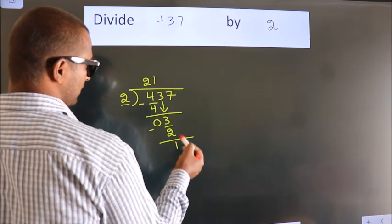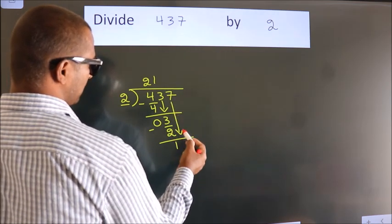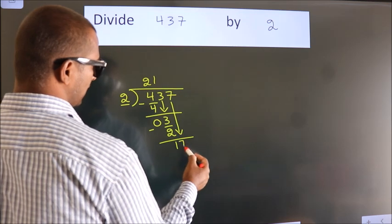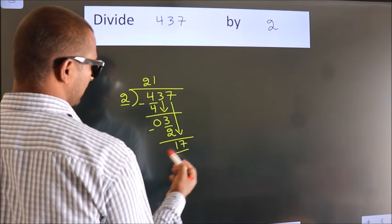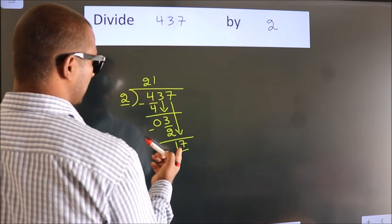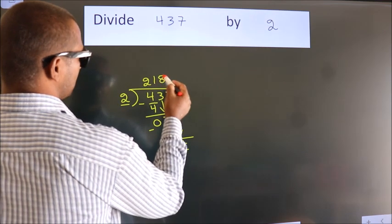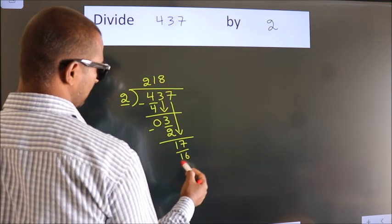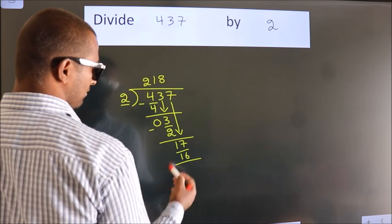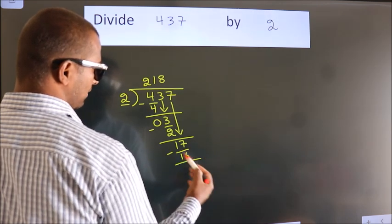After this, bring down the beside number. So, 7 down. So, 17. A number close to 17 in 2 table is 2 8's, 16. Now, we subtract. We get 1.